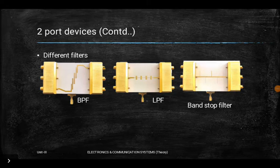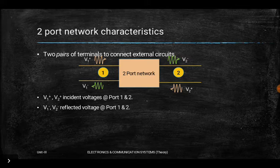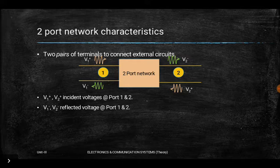Welcome back. We have seen two-port device examples like filters and isolators. Now we will look at characteristics — quantities to measure from a microwave network. This is applicable not only for two-port but for three, four, or n-number of ports. These quantities are useful to compare one device to another; for example, comparing alternators by their alternation factor, we pick the one with a higher value.